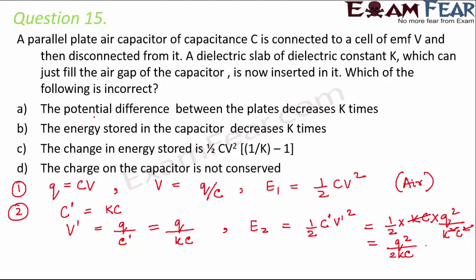Option A: the potential difference decreases k times. The earlier potential was Q/C, now it is (1/k)·(Q/C) — so yes, it decreased k times. This is correct. Option B: the energy stored decreases k times. Initially energy was ½CV², which equals Q²/(2C). The new energy is Q²/(2kC), so it also decreased k times. This is correct.